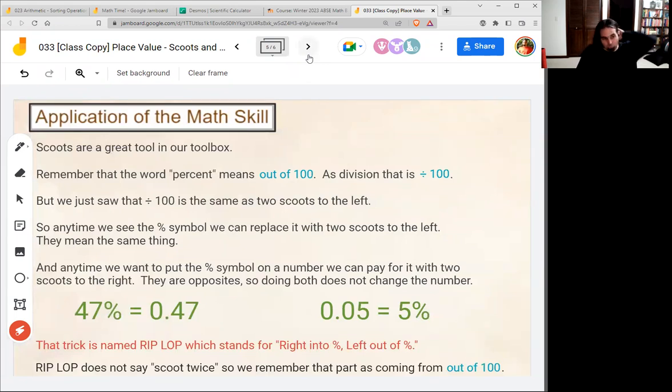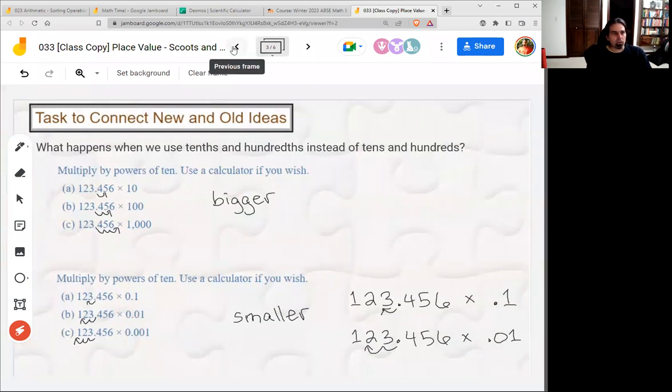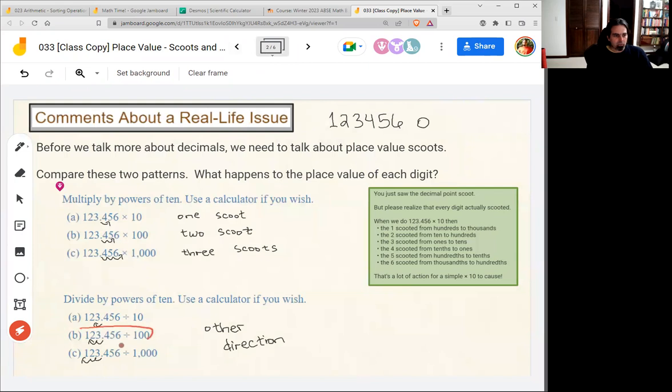So scoots are a great tool in our toolbox. Why? Because we talked about percent and percent means out of 100. And in division, that's divided by 100. And we just saw that dividing by 100 is really easy. It's just two scoots to the left. You don't need a calculator for that. Just scoot twice to the left.